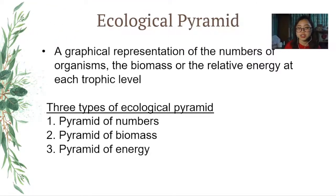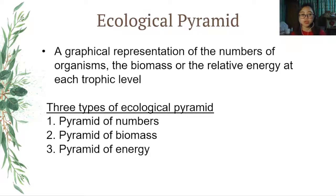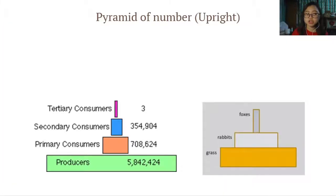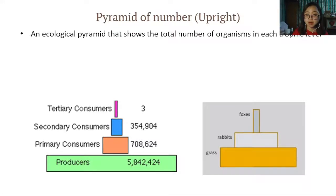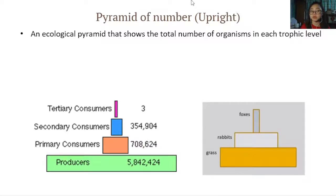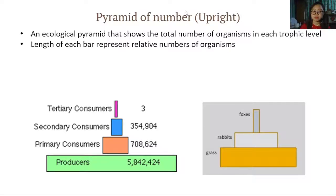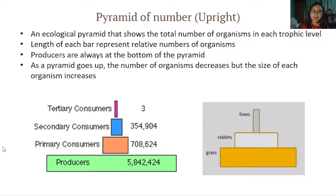Let's look at each ecological pyramid. First is the pyramid of numbers — this upright version shows the total number of organisms in each trophic level. The length of each bar represents the relative numbers of organisms. Producers are always at the bottom of the pyramid, and as the pyramid goes up, the number of organisms decreases but the size of each organism increases.